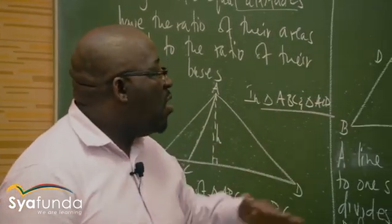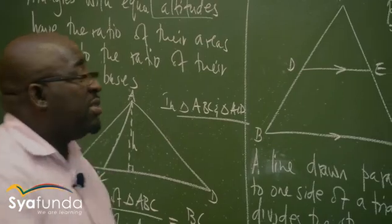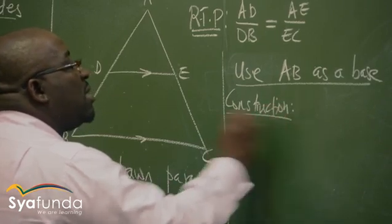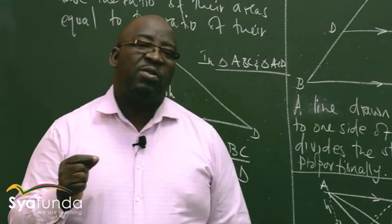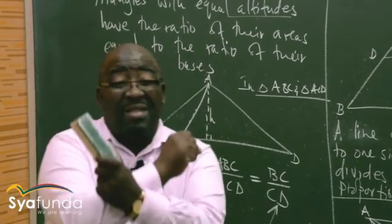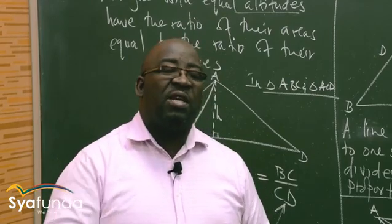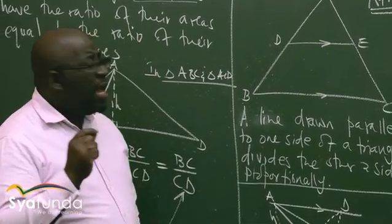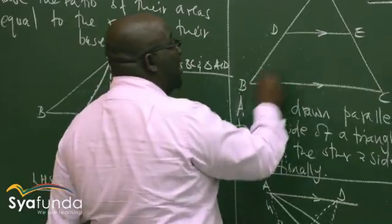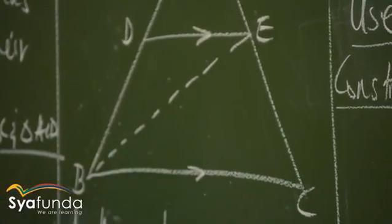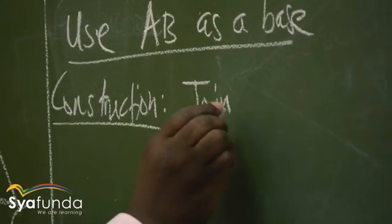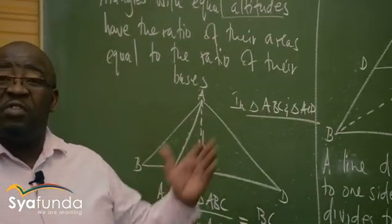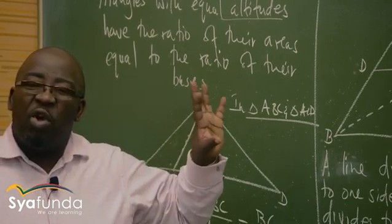Now, when I use AB as a base, I must have my construction. What is it that I'm going to construct here? If you construct, we are going to join BE — we are going to join this line. That's the first construction: we are going to join BE.